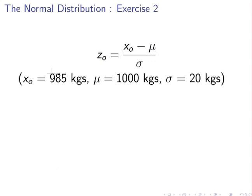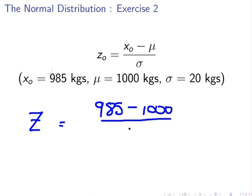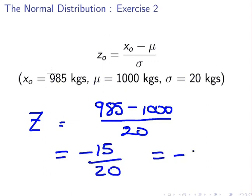So the Z-score is 985 minus 1000 all over 20. That's equal to minus 15 over 20, and that is equal to minus 0.75.